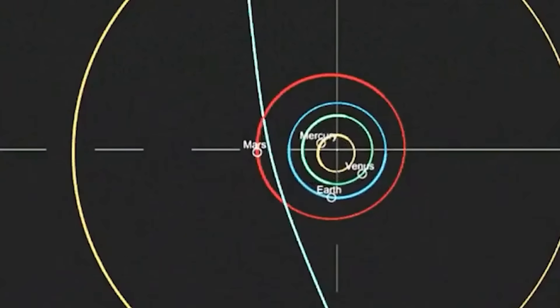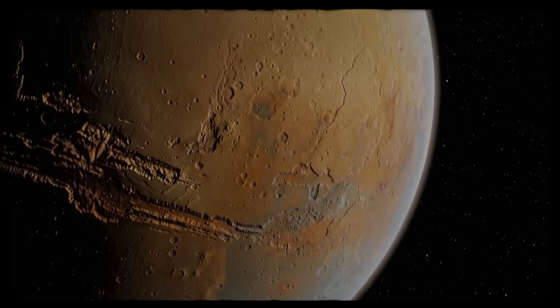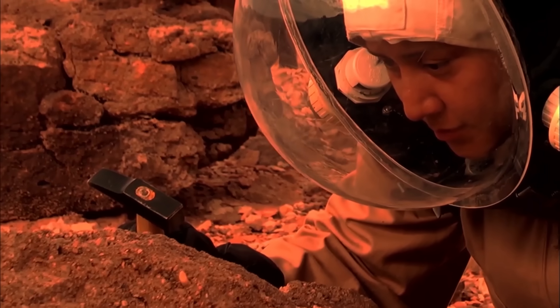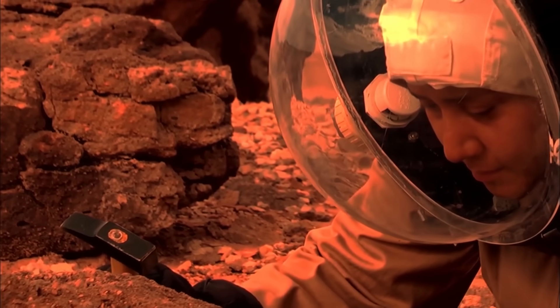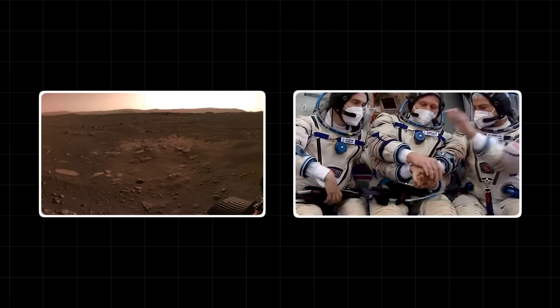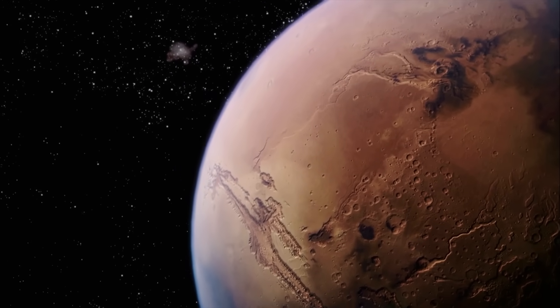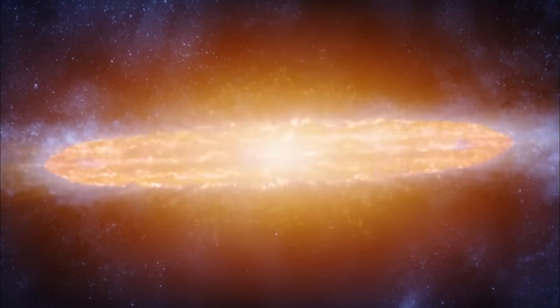The prospect of a collision with 3i Atlas has cast a long shadow over the future of Mars. The red planet has always been a source of fascination for humanity. It is the most Earth-like planet in our solar system, and it is the most likely place to find evidence of past or present life. We have sent rovers to explore its surface, and we have plans to send humans there in the near future. Mars is not just a planet, it is a symbol of our hopes and dreams, our relentless curiosity, our unyielding desire to explore the unknown. But all of that could be wiped away in an instant.